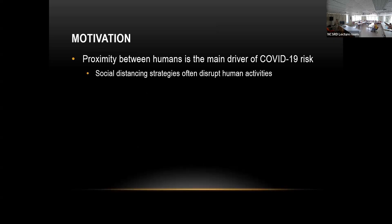The proximity between humans is the main driver of COVID-19 risk. We started this project before COVID — at that time, we said Ebola. There are many infections spread due to proximity. For example, M-pox is spread by very close proximity, while COVID is spread through much looser proximity.